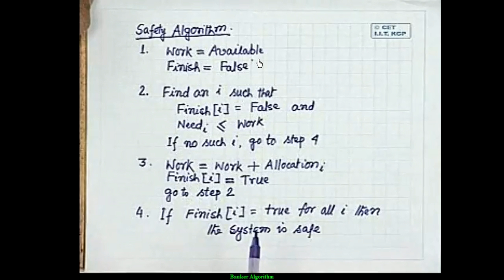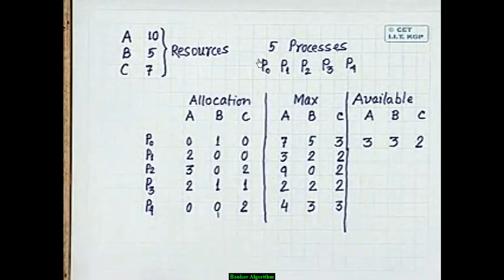Keep repeating until we get a safe sequence. That covers the safety algorithm and the Banker algorithm. Now let's work through a real example: we have three resources A, B, C and five processes.